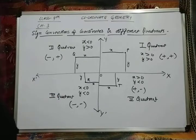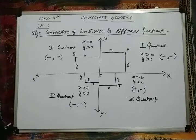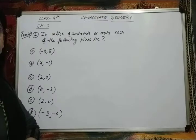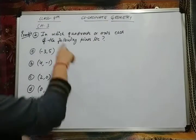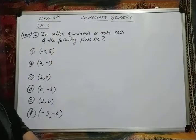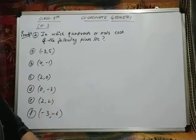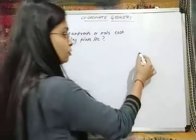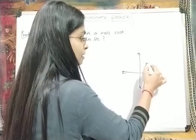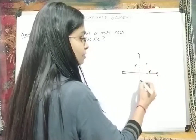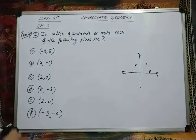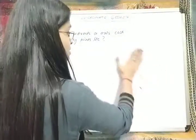So the sign convention summary: First quadrant — both x and y positive (+, +). Second quadrant — x negative, y positive (−, +). Third quadrant — both x and y negative (−, −). Fourth quadrant — x positive, y negative (+, −). On the x-axis a point is (x, 0); on the y-axis a point is (0, y). Just pause and note this down before we do the questions.